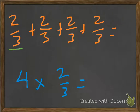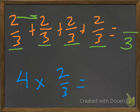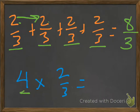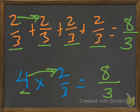So that's what it would look like: 2 thirds plus 2 thirds plus 2 thirds plus 2 thirds. Again, the denominator stays the same, and we just add straight across the numerators: 2, 4, 6, 8. Or we can look at it this way — since there are 4 people and they each get 2 thirds, it would be 4 times 2 thirds. The denominator stays the same; multiply across, and we get 8 thirds. As a mixed number, we get 2 and 2 thirds.